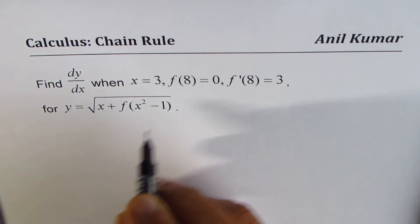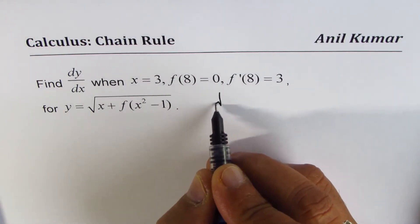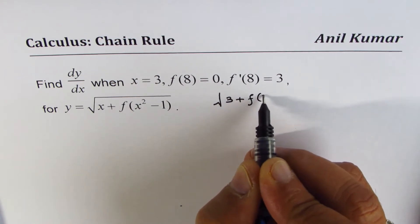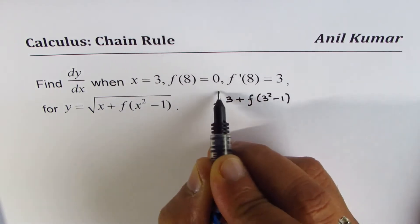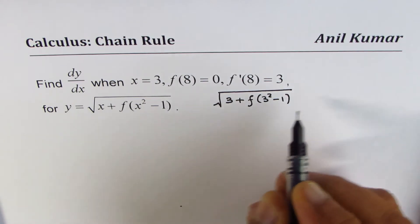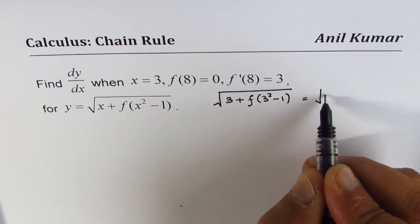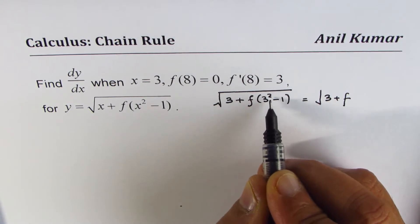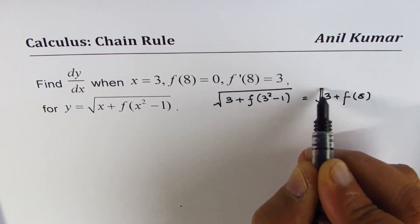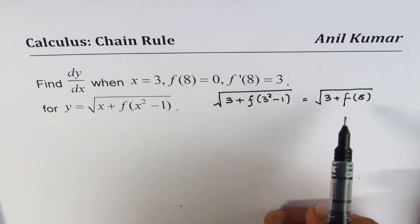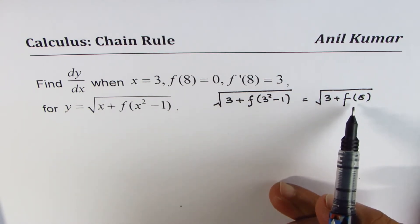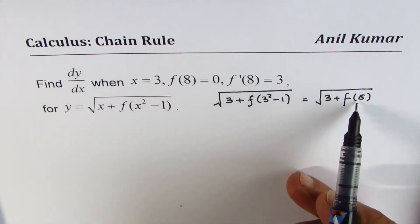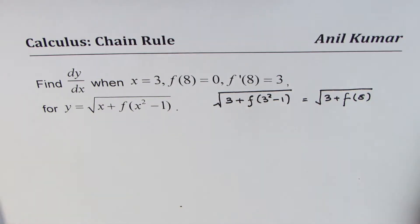If I substitute 3, I get the square root of 3 plus f(3² − 1), which gives square root of 3 plus f(9 − 1), and 9 minus 1 is 8. That is the reason we are given the derivative at 8 and the value at 8 for the given function. I hope now you can make the connection.